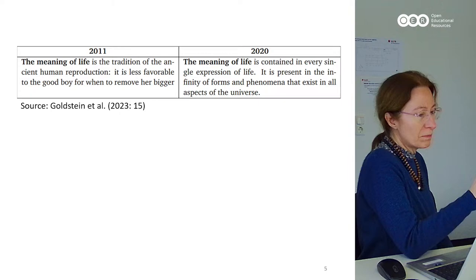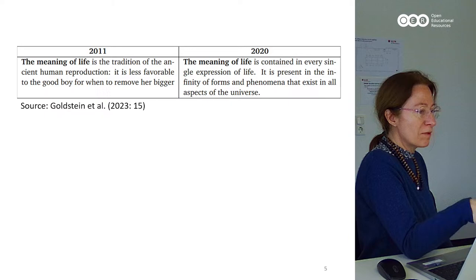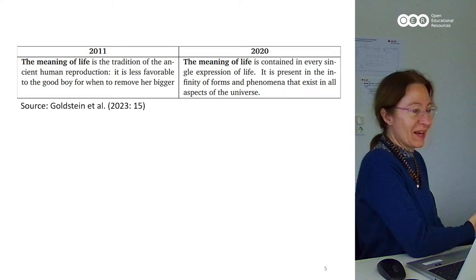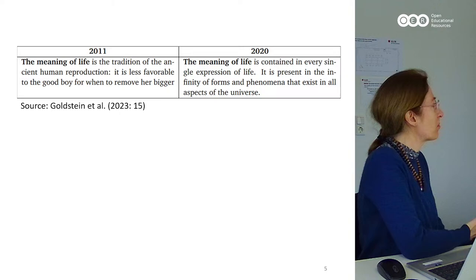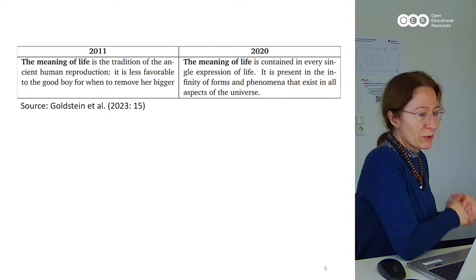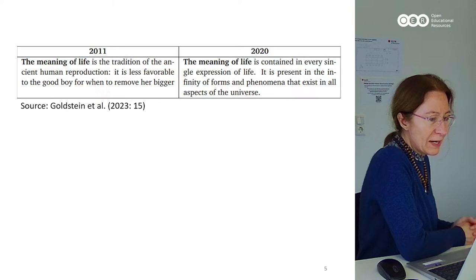Using the same prompt — the part in bold — 'the meaning of life,' the task was simply to complete the sentence and generate the text. The result in 2011 reads: 'The meaning of life is the tradition of the ancient human reproduction column. It is less favorable to the good boy for when to remove her bigger.' This text is absolutely incoherent. In 2020, the same prompt reads: 'The meaning of life is contained in every single expression of life. It is present in the infinity of forms and phenomena that exist in all aspects of the universe.' This is much better — the text is well constructed.